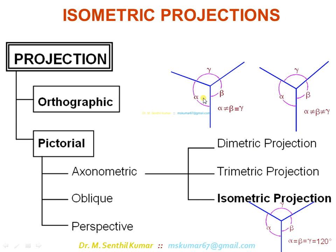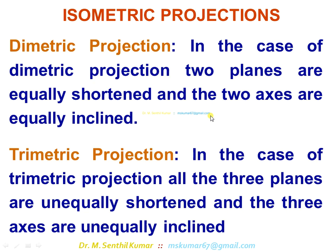In dimetric projection, two angles are equal and the third angle is different — that is why it is called dimetric. In trimetric, all three angles are not equal. Regarding planes: in dimetric projection, two planes are equally shortened and the two axes are equally inclined. In trimetric projection, all three planes are unequally shortened and the three axes are unequally inclined.